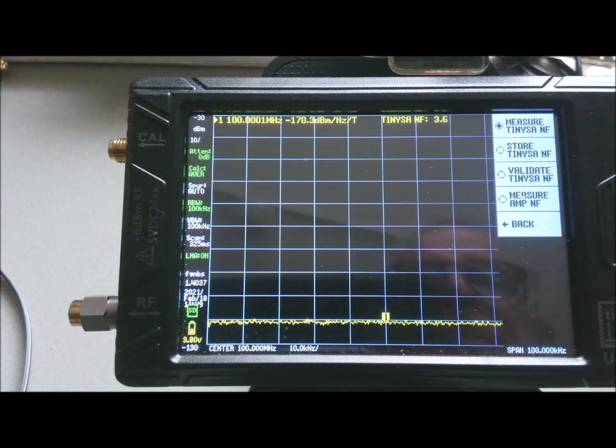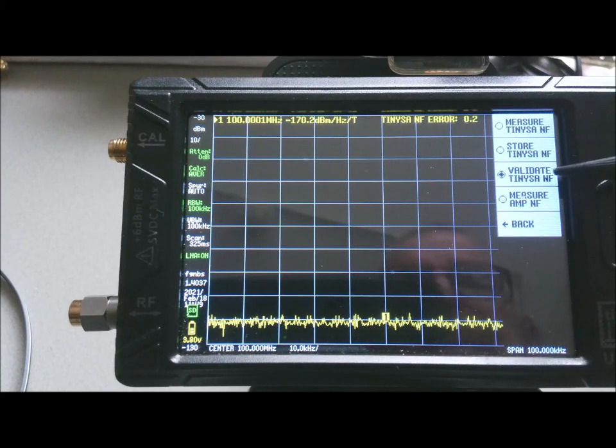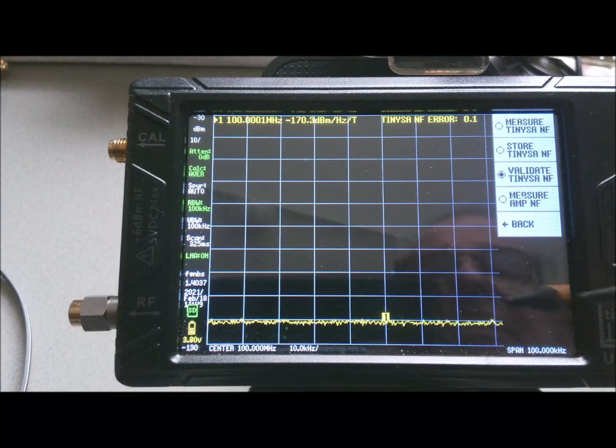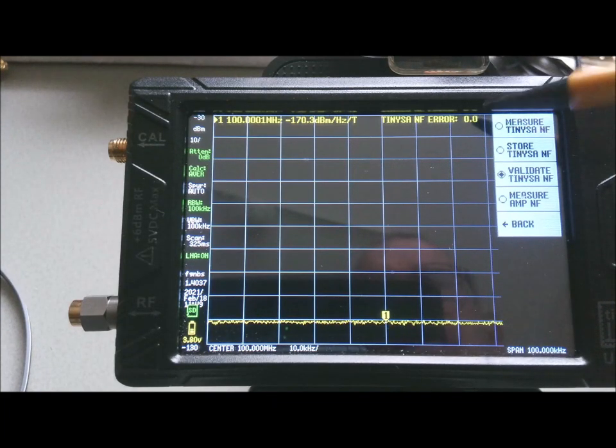Once this has stabilized, you can store the measured number by activating the store menu. And then automatically the next step is activated, and that's the validation. And that's to double check if the stored number is correct. And what it basically does is it measures the noise level at the input of the TinySA and then subtracts its own noise figure. And that should lead to a noise figure error of 0. And you see here that the error is almost 0, so that's good.